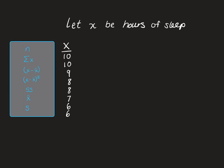To get started, we need to define a variable and have some data. We're going to call our variable x, and that's going to stand for hours of sleep. The raw scores for x are 10 hours, 10 hours, 9 hours, 8 hours, 8 hours, 7 hours, 6 hours, and 6 hours.